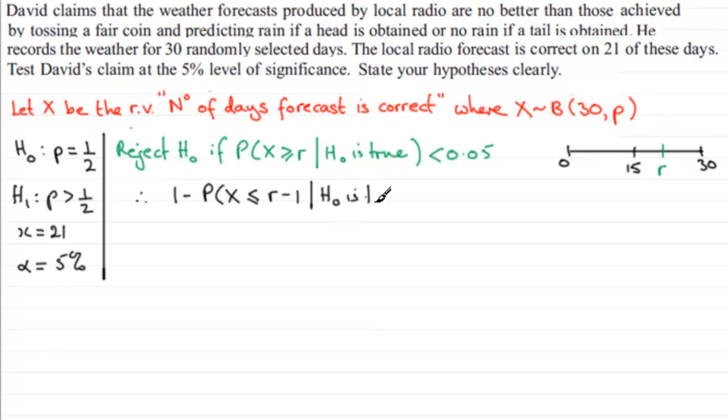If I rearrange this inequality, I could subtract 0.05 from both sides; that would give me 1 minus 0.05, which is 0.95. And if I move this to the other side, add this probability to both sides, I would therefore have the probability that X is less than or equal to R minus 1, given that H₀ is true...